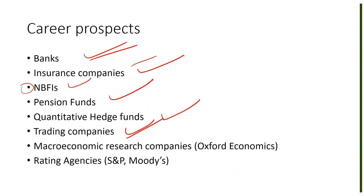Trading companies use financial econometrics for their day-to-day trading activities. Macroeconomic research companies — such as Oxford Economics and many others in London, New York, and Singapore — are also employers for people from economics or statistics backgrounds. Rating agencies like Standard & Poor's and Moody's also use financial econometrics techniques in their day-to-day work.